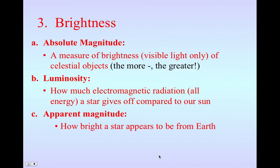Okay, we're almost done here. Number three is my brightness. We have three ways of measuring the brightness of a star. The first one is called absolute magnitude. And this looks at just the visible light coming off of celestial objects. And if you look on the Hertzsprung-Russell diagram, you'll see that the more negative it is, the greater.